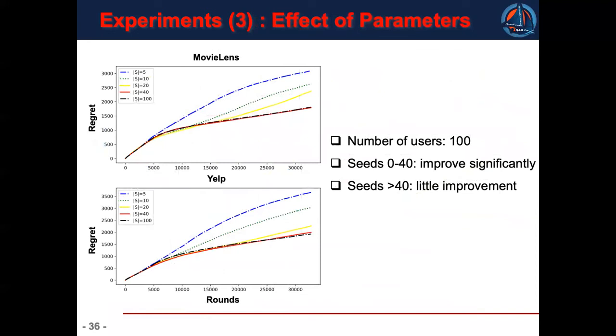Also, we evaluate the effects of the parameters. To sum up, when the number of seeds is small, the improvement is significant. When the number of seeds is large, the improvement is not obvious. In this case, 40 seeds are already enough to find good clusters.